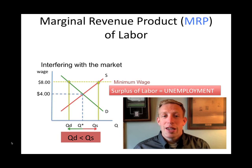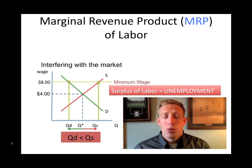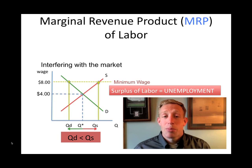If firms pay what's called an efficiency wage, what they're doing is paying greater wages than the market would dictate, for a variety of reasons: one, to reduce the turnover rate; one, to induce the best people to come to the firm; and another reason would be that you reduce the shirking that people do on the job, because they don't want to lose their job and they'll be more productive. Regardless of why they do it, if they pay a wage above equilibrium, it's going to create unemployment — just like a union wage and just like a minimum wage.